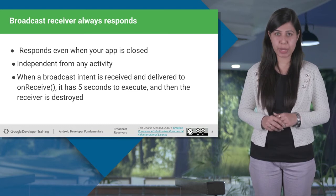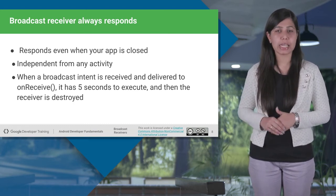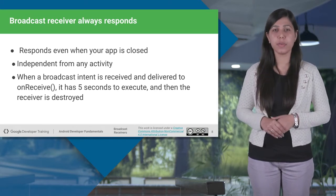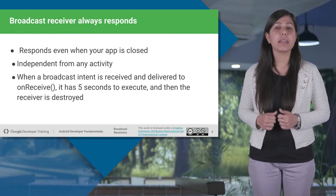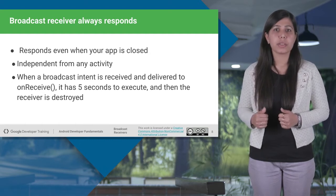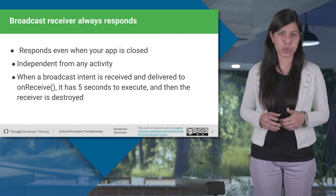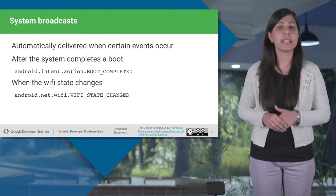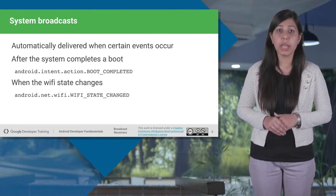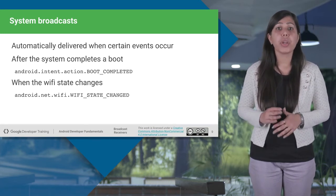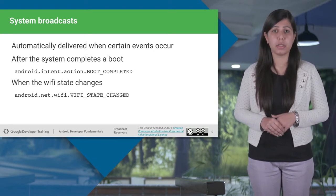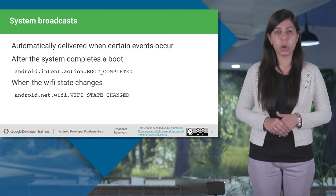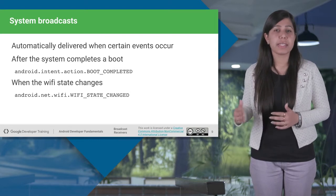Broadcast receivers are implemented by extending the Android BroadcastReceiver class and overriding the onReceive method, which is required to listen for specific broadcast intents. When a broadcast intent is received and delivered to onReceive, the method has five seconds within which to perform any necessary tasks before the receiver is destroyed. It is important to note that a broadcast receiver doesn't need to be running all the time. In the event that a matching intent is detected, the Android runtime system will automatically start up the broadcast receiver before calling the onReceive method — for example, when the system completes a boot or loses a connection to a wireless network when the Wi-Fi state changes.